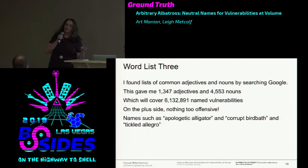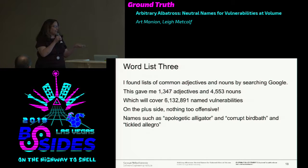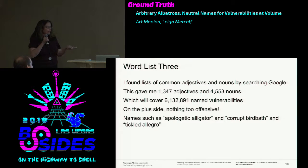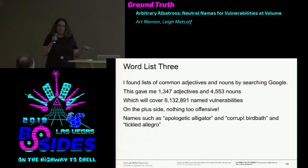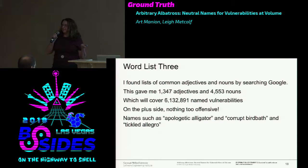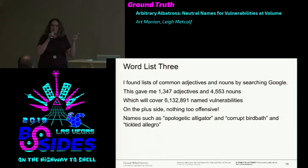You get lovely names like 'apologetic alligator,' 'corrupt birdbath,' 'tickled allegro.' These are not bad. The problem is 'corrupt' has a negative connotation, and negative is not a good thing. So let's find happy words.